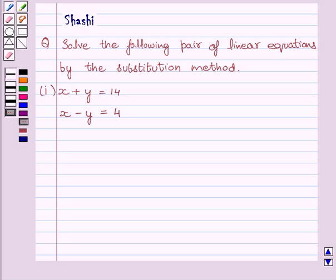The question is: solve the following pair of linear equations by the substitution method. The equations are x plus y equals 14 and x minus y equals 4.